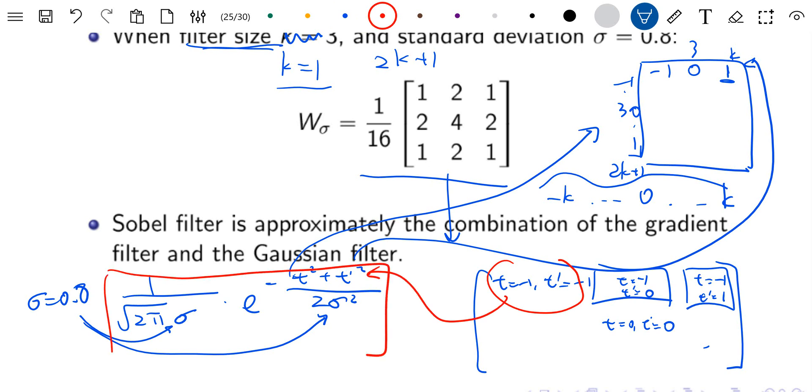This whole thing with sigma equals 0.8 will be a number. If you put it into a calculator, it will be approximately 1 over 16, which is this number here. There's a 1 over 16 outside, so you can multiply inside. This is 1 over 16, this is 1 over 8, 1 over 16, and so on. Basically, if you substitute all of these as t and t prime and compute the expression, you'll get the numbers in this filter.